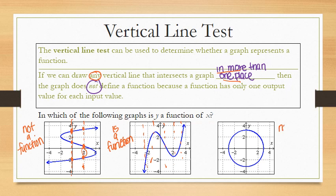And the third one is not a function. Here, if I draw a vertical line in lots of different places on this graph, it's going to intersect it in more than one place.